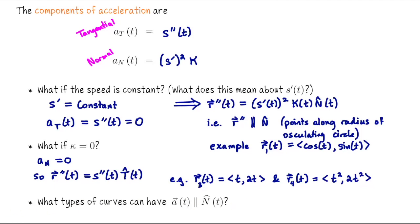Lastly, when would a curve always have its acceleration vector parallel to the normal vector? Going back to the first case, it works both ways: if the acceleration vector is parallel to the normal vector, then s″ must be zero, meaning the speed is constant.